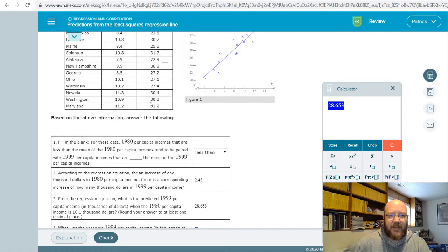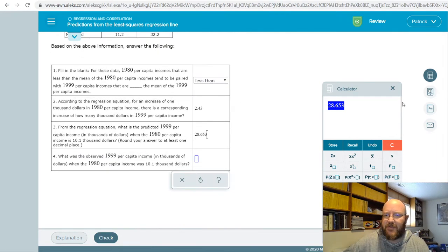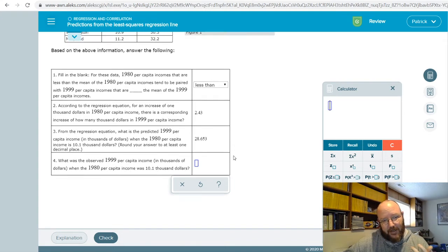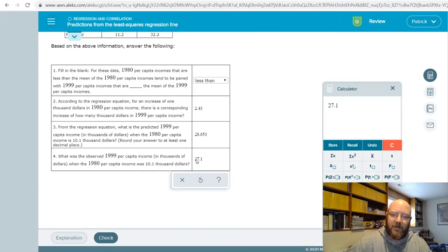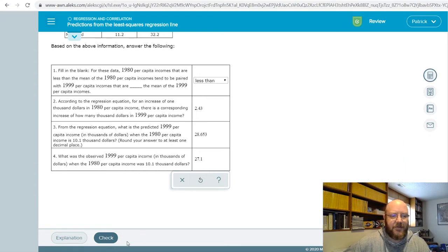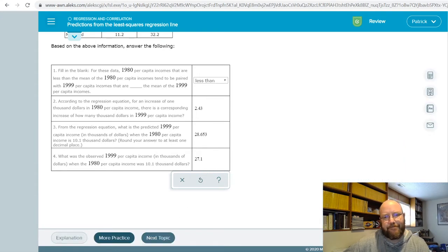Notice that this is actually different than that, than that one. That's fine. That's absolutely fine. So I know that throws some people off. Oh, shouldn't they be the same? No, no, no. They don't have to be the same. We'll explain why that is in the future. And here's the other question. So 1999 per capita income when the 1980 per capita income was $10.1 thousand. So what was the observed value? This is when we just go look at the table right here, $27.1. Whenever it's asking you for the observed value, all it's doing is asking you for the table lookup. And again, notice those are different. Totally fine.